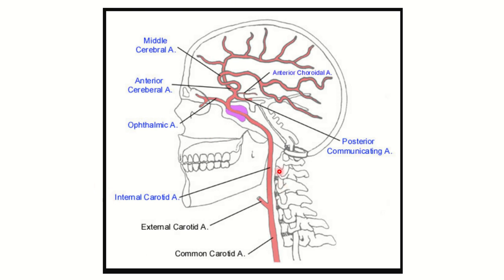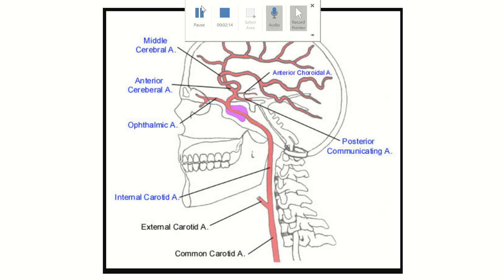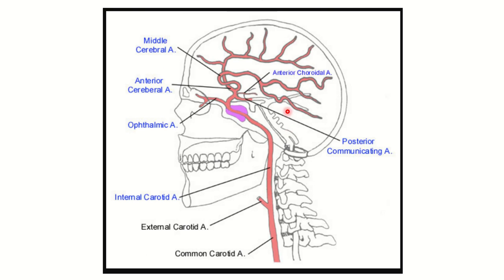This is the internal carotid artery, and if we go upward, we can see: first the ophthalmic artery, then anterior cerebral artery, middle cerebral artery, anterior choroidal artery, and posterior communicating artery. These are the branches of the internal carotid artery that will be affected in the procedure.